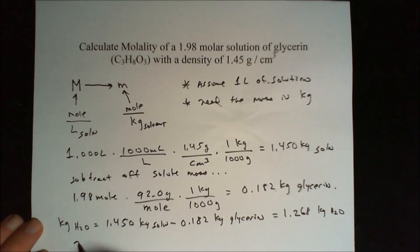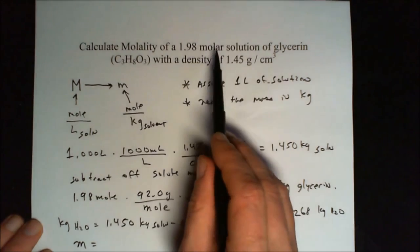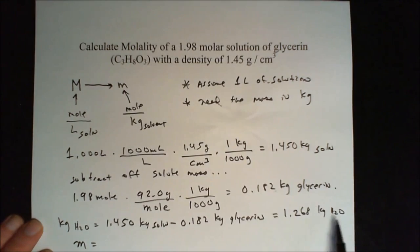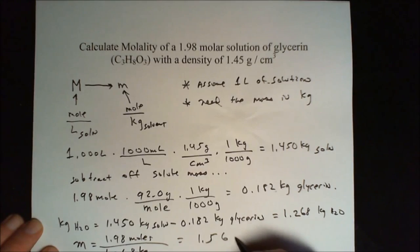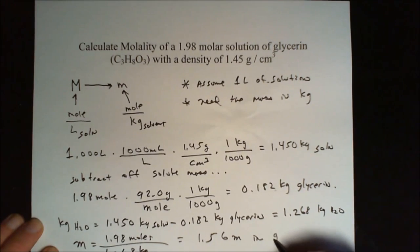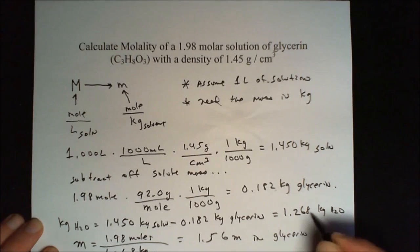And finally, we can calculate our molality, which is the moles per kilogram of solvent. So we got our moles, which is 1.98, per kilogram of solvent now. So we got 1.98 moles of glycerin over 1.268 kilograms of water. And that gives us 1.56 little m in glycerin, glycerin in water.